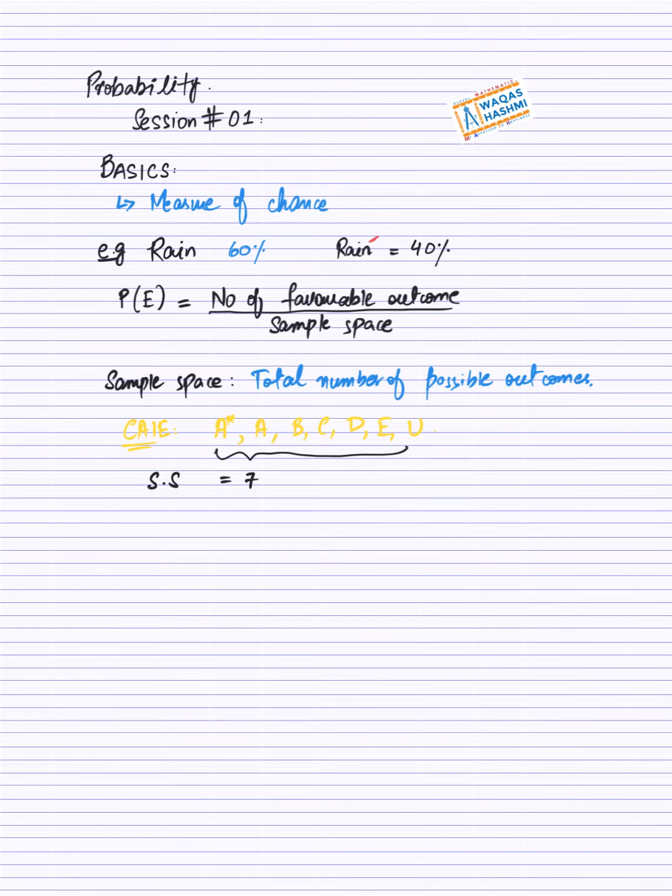Ab example le aap coin ki. Ek coin hai. Agar aap us coin ko flip karayenge, toh kya option aayega bhai? Ya toh head aasakta hai, ya ake tail aasakta hai, aur toh kuch nahi aayega. Toh coin ka, jo aapke paas sample space hooga, woh kitna ho jayega, that is two.